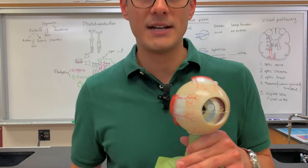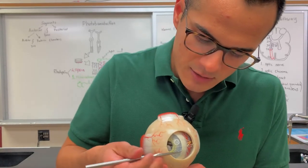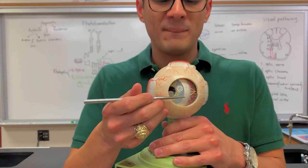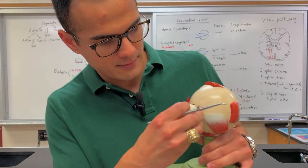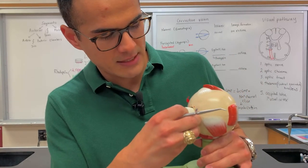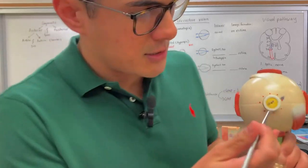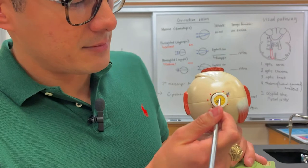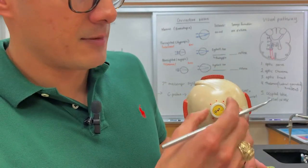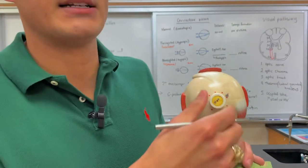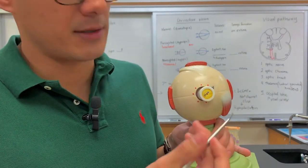Some of the other different external features: this part here is known as the cornea. On the back side of the eye — let me take this sticker off — this is the optic nerve. You can see all of the different axons there for the optic nerve, and this is the connective tissue sheath that's covering the optic nerve.